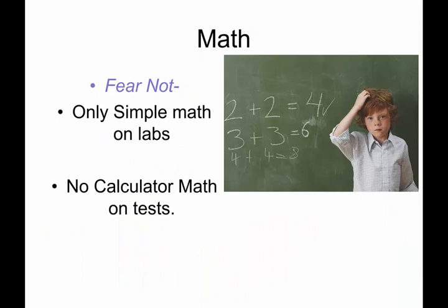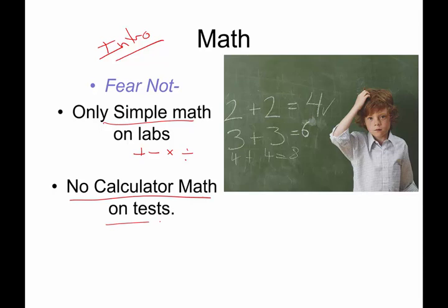Math. This is an introductory astronomy class. The purpose of this class is not to prepare you to go work at NASA, I'm sorry to say. But because of that, we are going to use very, very simple math — add, subtract, multiply, and divide. That's all we're going to do. And there's no calculator math on tests, aside from simple things like 3 times 2 or 4 plus 7. Just really, really simple things. If you have a calculator on your phone, that will be just fine.